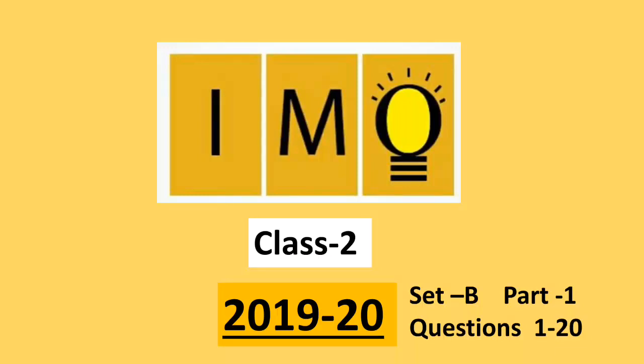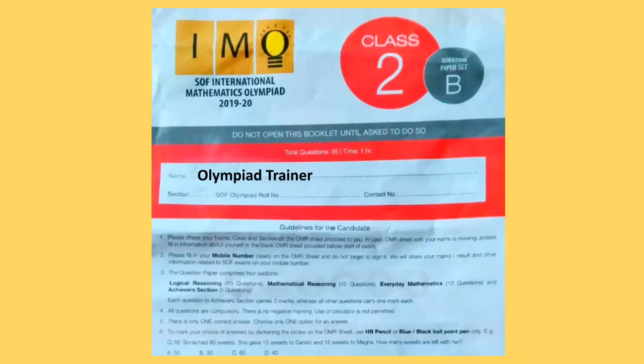Question paper comprises four sections: Logical Reasoning, Mathematical Reasoning, Everyday Mathematics, and Achievers section. In this video we are going to see first two sections. For other two sections please click on the link given in the description box. New users please subscribe our channel Olympiad Trainer for more such solved question papers.